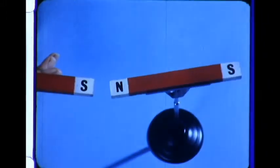When iron or steel comes into the magnetic field, it is attracted. The attraction is strongest at the ends of the magnet, the poles. All magnets have poles.